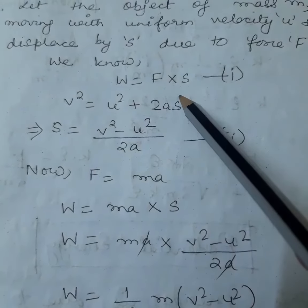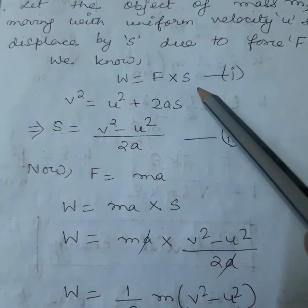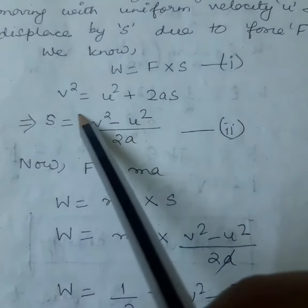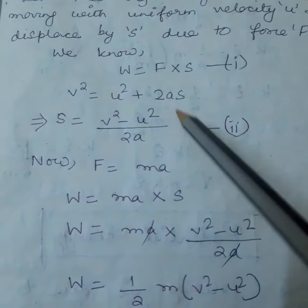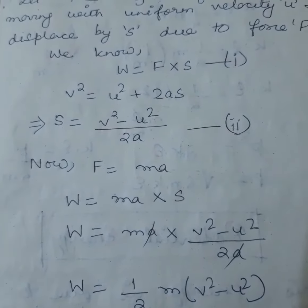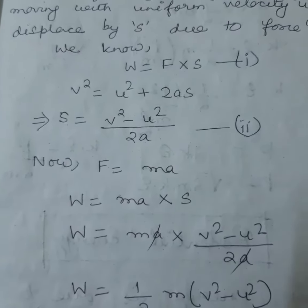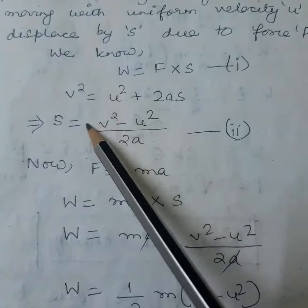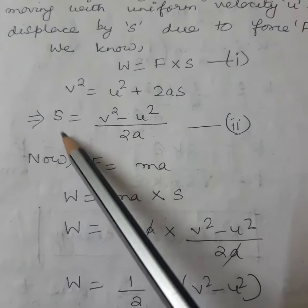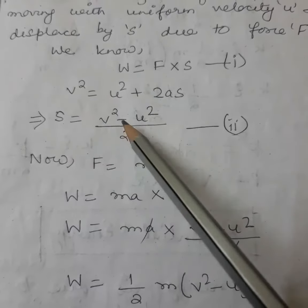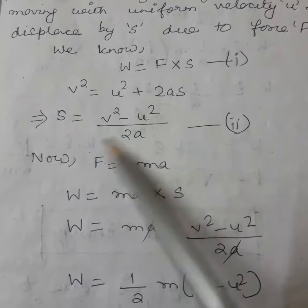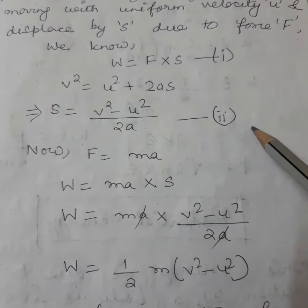We also know from the third equation of motion: v square is equal to u square plus 2as. From here we can find out s. So if v square equals u square plus 2as, then s is equal to v square minus u square, all divided by 2a. Put this as equation 2.